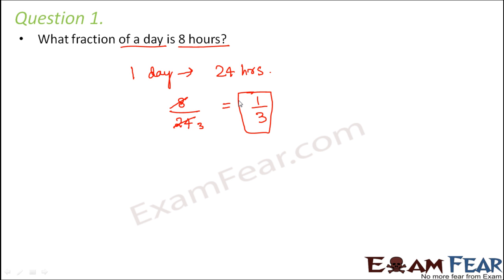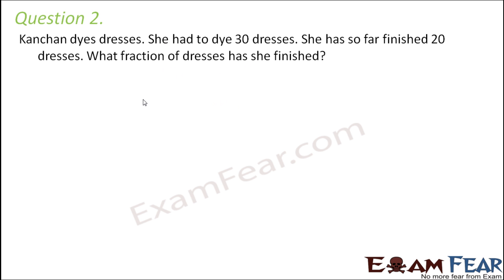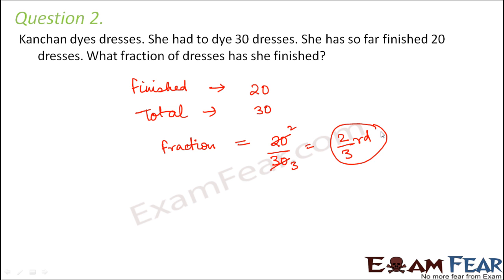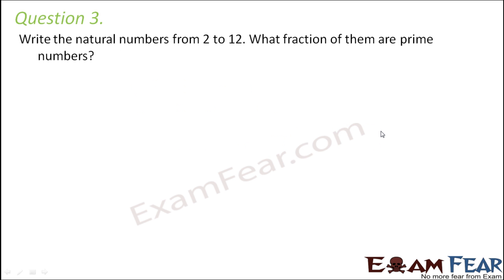Question number two: Kanchan dyes dresses. She had to dye 30 dresses and has so far finished 20. What fraction of the dresses has she finished? The number of dresses she has already finished dyeing is 20 out of a total of 30. So 20 by 30 simplifies — dividing both by 10 — to 2 by 3. Two thirds of the dresses have already been finished.